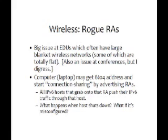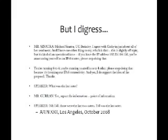We had a problem I call 'rogue RAs': systems with connection sharing turned on—sometimes unbeknownst to the user—that have a globally routable or even private IPv4 address. These systems create their own 6to4 address and announce a route saying 'I have your IPv6 default—send all your IPv6 traffic through me,' whether or not they have actual connectivity to a 6to4 relay. Your IPv6 traffic effectively gets blocked and has to time out before falling over to IPv4. This happens a lot on wireless and conference networks.